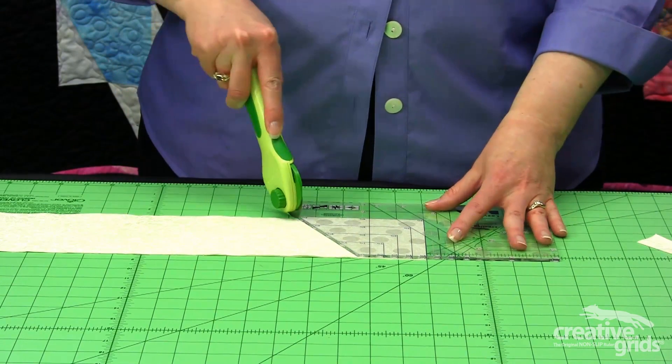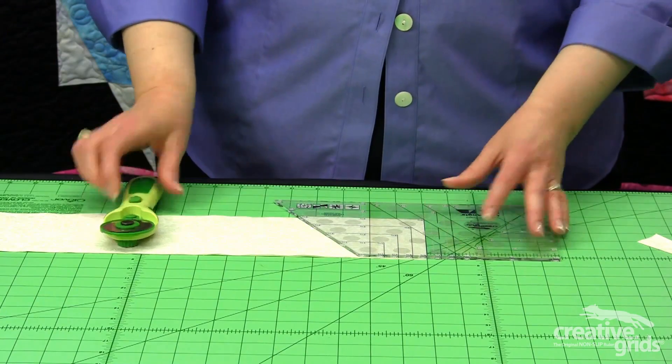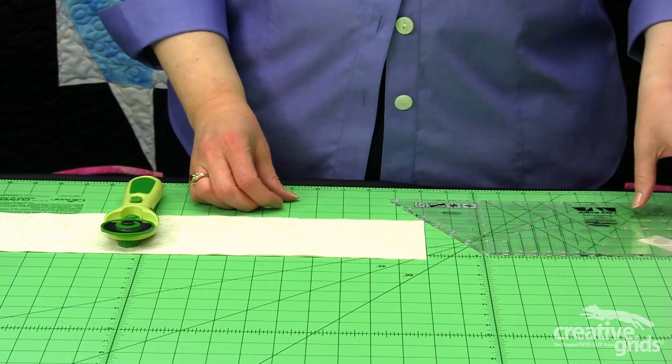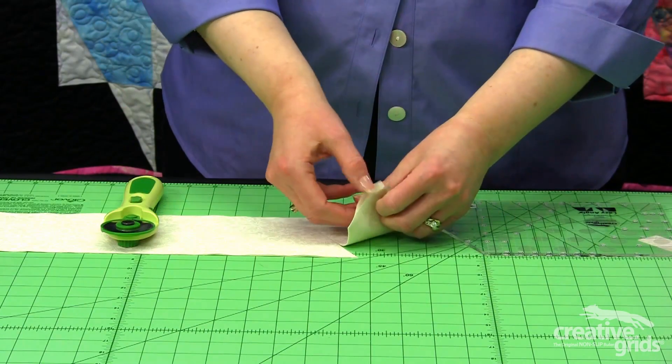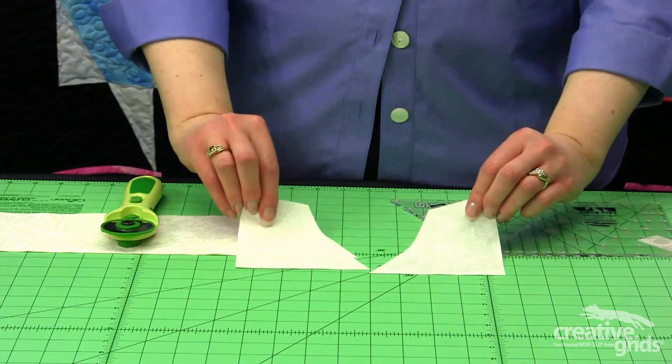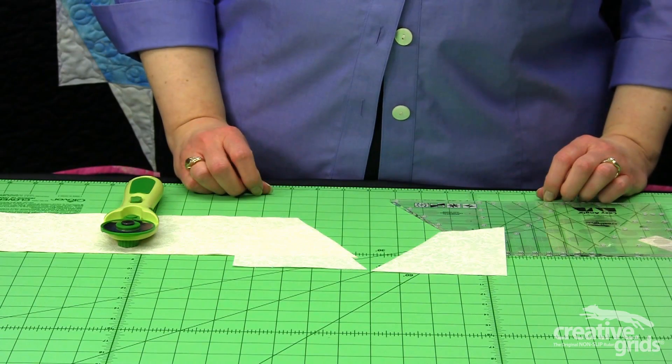And simply cut along the angled edge for our first two A pieces. We're working with a folded piece of fabric, so we have two mirror-imaged A pieces at 4 1/2.